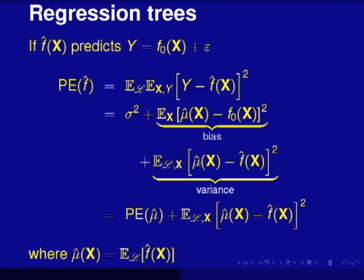It's not hard to show — just take the square, expand things out. The cross product term disappears and you get the following expression, which is basically a mean square error decomposition. The first term is the internal noise — that's the lower bound to the generalization error. The second term is the bias: the difference between the true predictor and the mean of your predictor, squared. The other term is the variance: the difference between your predictor and its mean value. So you get this mean square error decomposition.